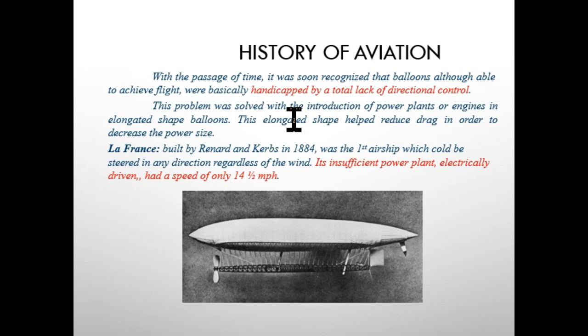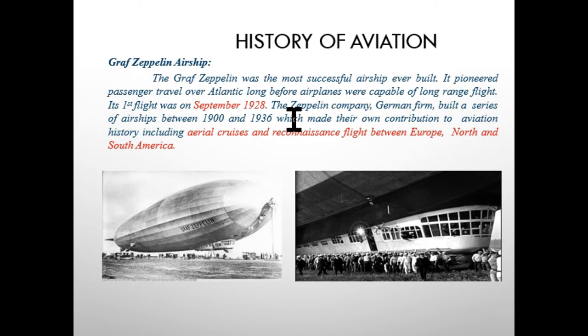Later on, they found that balloons with respect to their shape were not very controllable — they lacked directional control. They then fixed some kind of engine to produce thrust output, but they could only achieve a speed of 14.5 miles per hour.